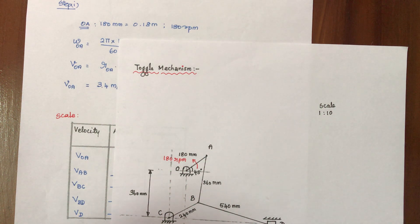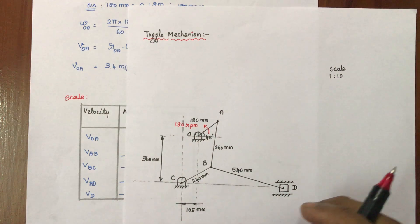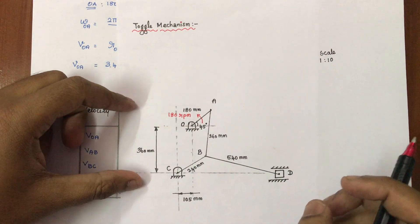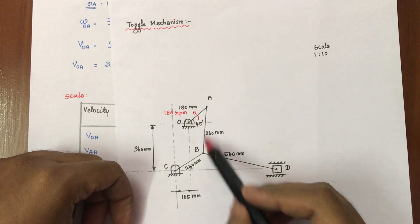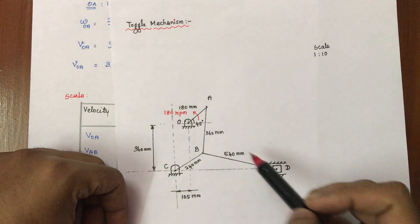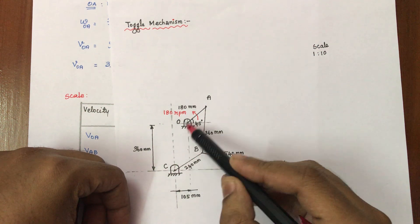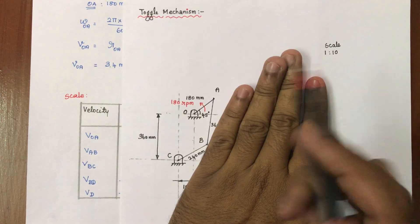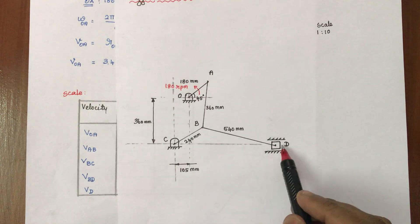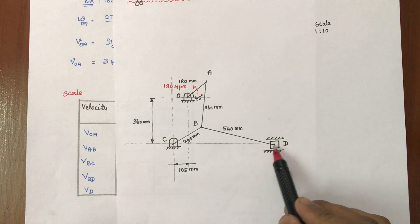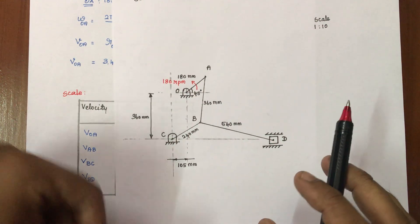Hello, in this video we are going to see the velocity diagram of the toggle mechanism. The toggle mechanism is the combination of a 4-bar chain mechanism and a slider crank mechanism. It is a 4-bar chain mechanism with extra 2 links attached to a connecting rod and a slider, making it a combination of the 4-bar chain and slider crank mechanisms.